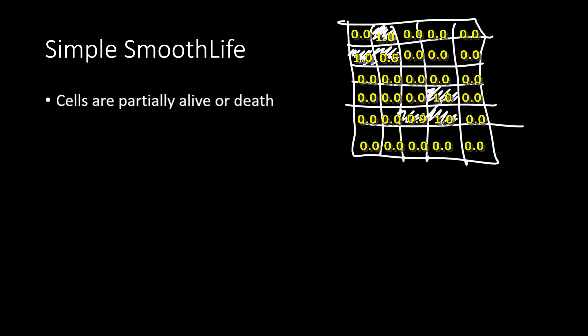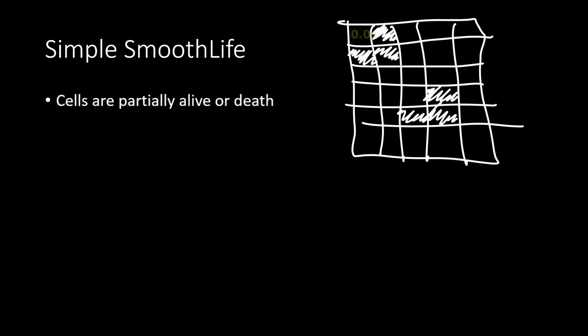That is to say, the cell may be dead, which means 0, alive, which has a value 1, or partially alive, which has a value between 0 and 1.